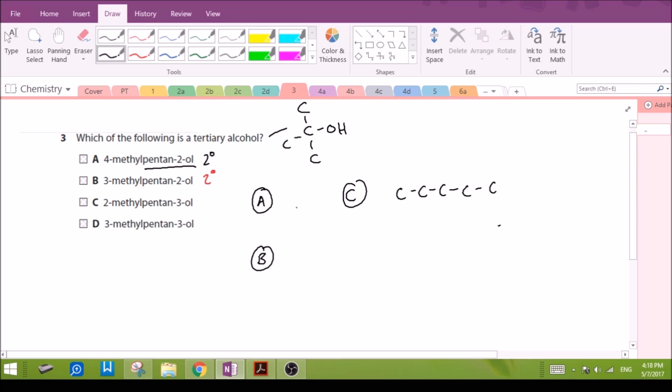2-methylpentan-3-ol, so the hydroxyl group is on carbon number three and the methyl group is on carbon number two. So this carbon that's holding the hydroxyl group is joined to two other carbons, this is also a secondary alcohol. That leaves us with D to be our tertiary alcohol, but let's check to make sure. D: 3-methylpentan-3-ol, one two three four five carbons, hydroxyl on the third carbon and the methyl group is also on the third carbon. So this particular carbon that's holding the hydroxyl group is joined to one, two, three other carbon atoms. This is the tertiary alcohol that we are looking for.